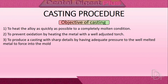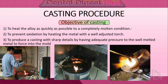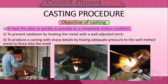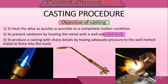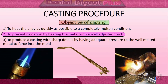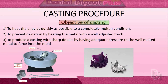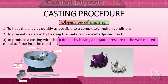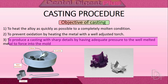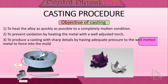The objectives of casting are: first, to heat the alloy as quickly as possible to a completely molten condition; second, to prevent oxidation, which is done by heating the metal with a well-adjusted torch; and third, to produce a casting with sharp details by having adequate pressure to force the molten metal into the mold.